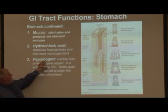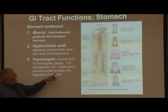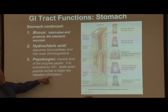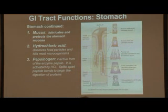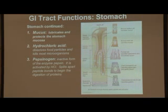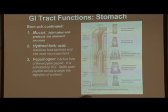Pepsinogen is the precursor enzyme that's going to be converted to pepsin by hydrochloric acid, and it's going to begin to break down proteins. We've talked about carbohydrates beginning to be digested in our mouth, and lipids beginning to be digested in our mouth. Now in our stomach, because of the hydrochloric acid and the strong acid content, the amylase that starts carbohydrate digestion and the lipase produced in our mouth stop working, and we begin the digestive processes in the stomach itself.